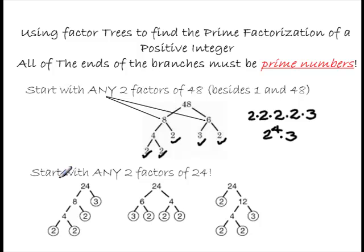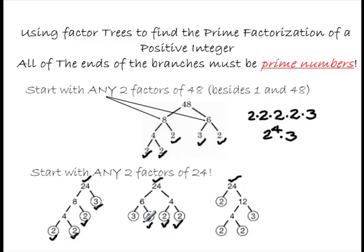Moving to another example: starting with the number 24, this is just to show you it doesn't matter whether you use 8 and 3, 6 and 4, or 2 and 12. At the very bottom of the branches, you still wind up with three factors of 2 and a 3. No matter how we arrive at our factors at the bottom of the tree, we wind up with a single 3 and three 2s. This goes to show that any two factors of a number can be broken down into the factor tree.